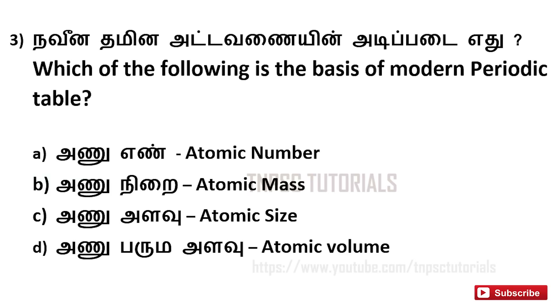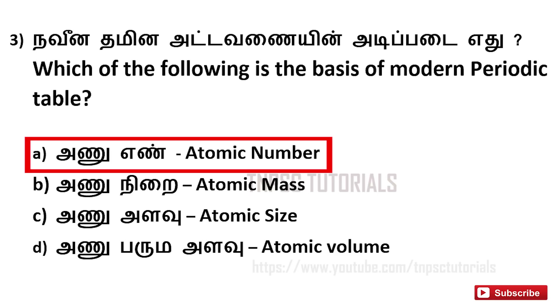Third one: which of the following is the basis of the modern periodic table? A. Atomic number, B. Atomic mass, C. Atomic size, D. Atomic volume. And the answer is A. Atomic number.